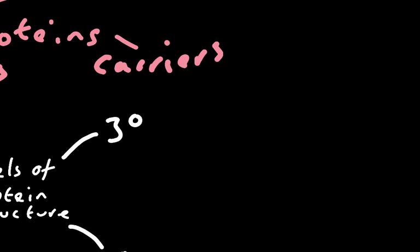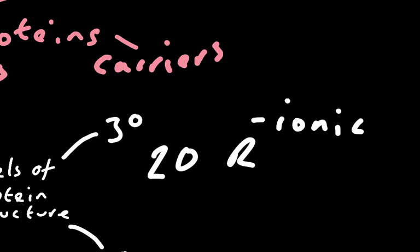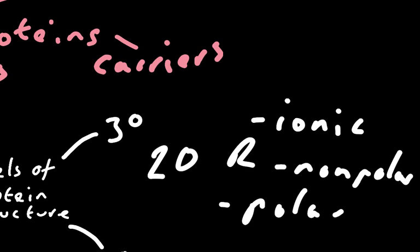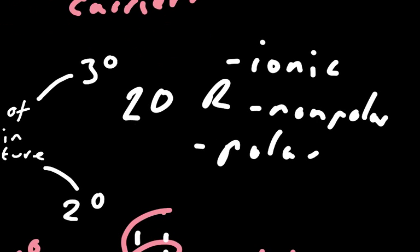Now tertiary structure is the third level of structure, and this is caused by interactions between the 20 different R groups. Now some of these R groups will become charged and they will form attractions between each other, and these are obviously ionic bonds. Some of them will be non-polar, and these will want to be not dissolved in water, so these will be hydrophobic, so they will be on the inside of a larger molecule so they'll be away from the water. Some will be polar, so they will want to be on the outside because they are hydrophilic.